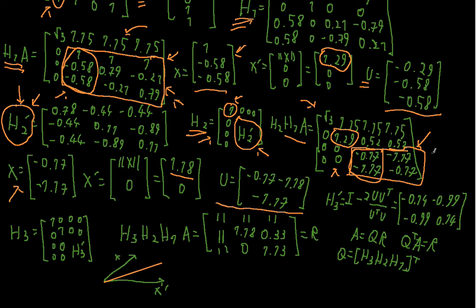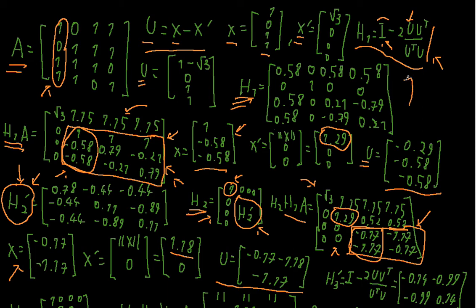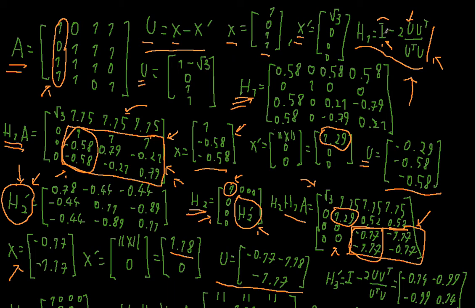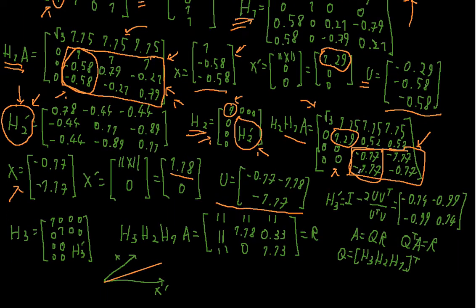Now I plug that into the formula — this time it's a 2×2 matrix, so the identity matrix is also 2×2. If you plug in everything, you get the third Householder matrix: −0.14, −1.99; −1.99, 0.14.